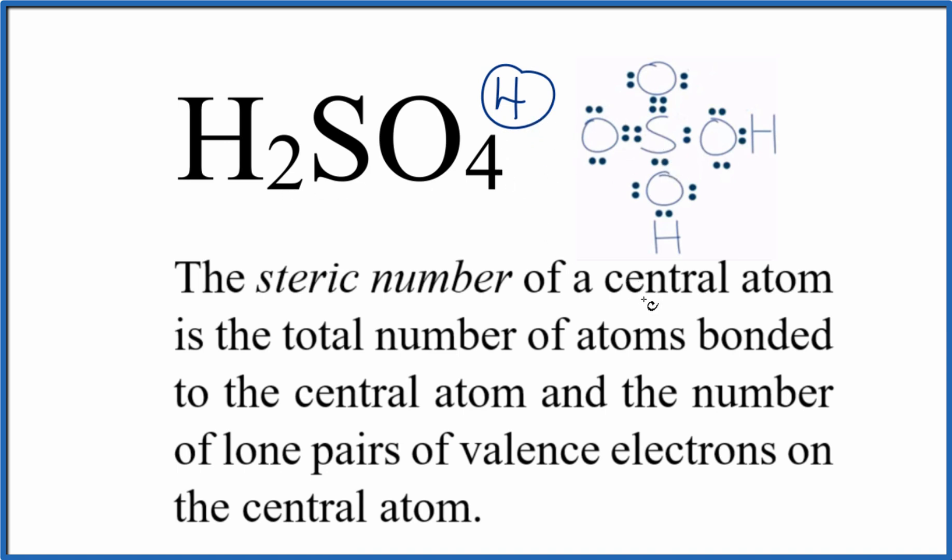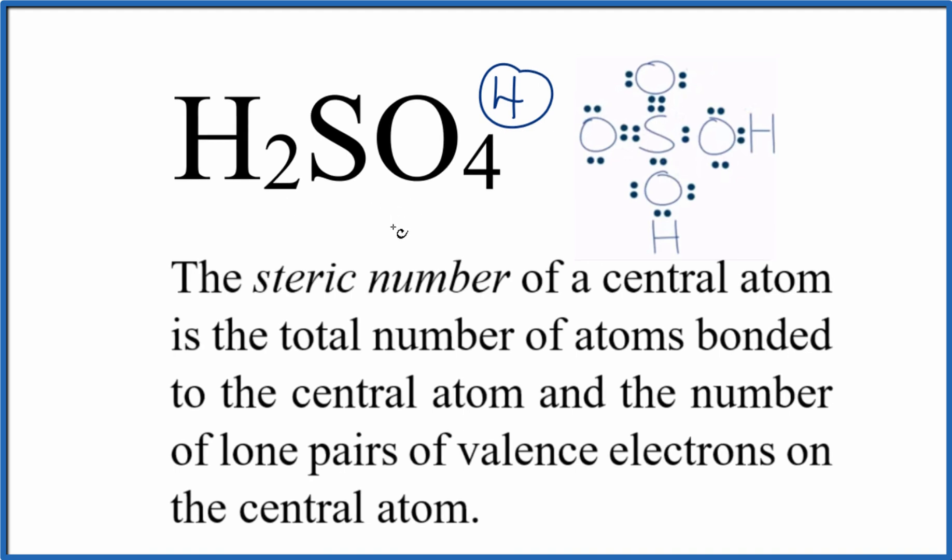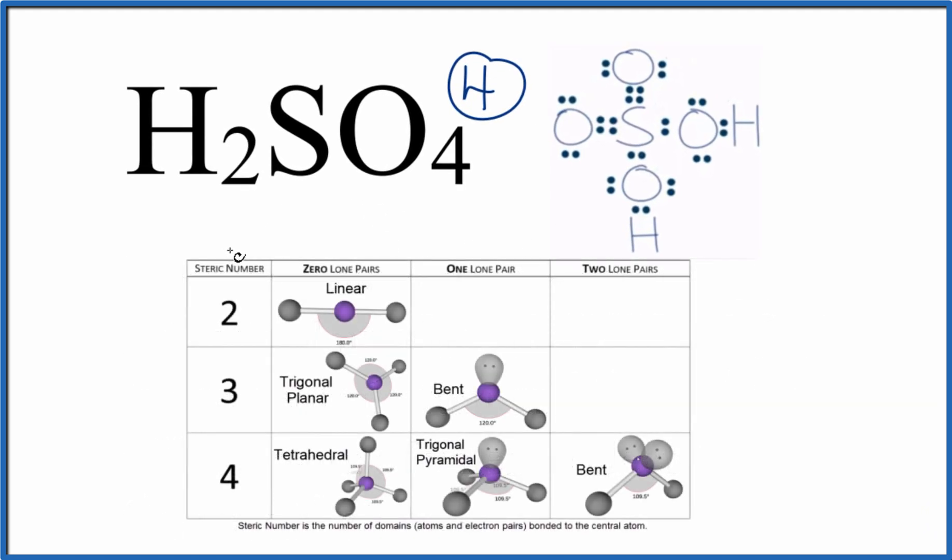And we can use that to determine the molecular geometry for H2SO4, like this. So we said we have a steric number here of four, and we don't have any lone pairs on the central sulfur. Zero lone pairs, we go down. And we have a tetrahedral molecular geometry for H2SO4 based on this central sulfur atom here.